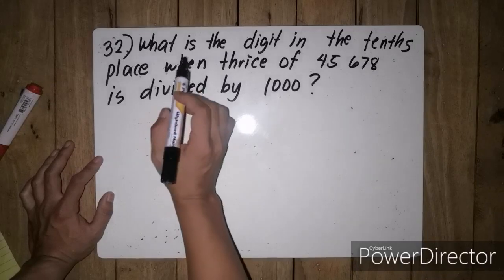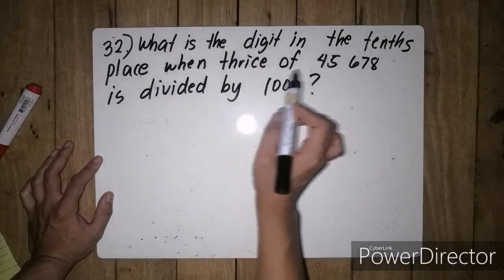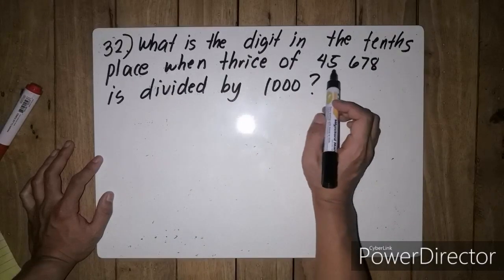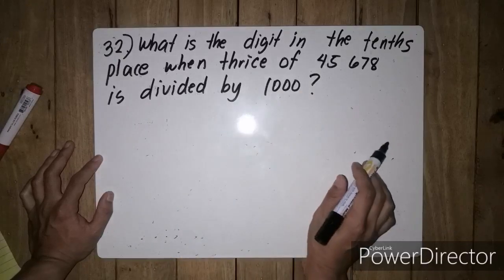For question number 32, what is the digit in the tenths place when thrice of 45,678 is divided by 1000?